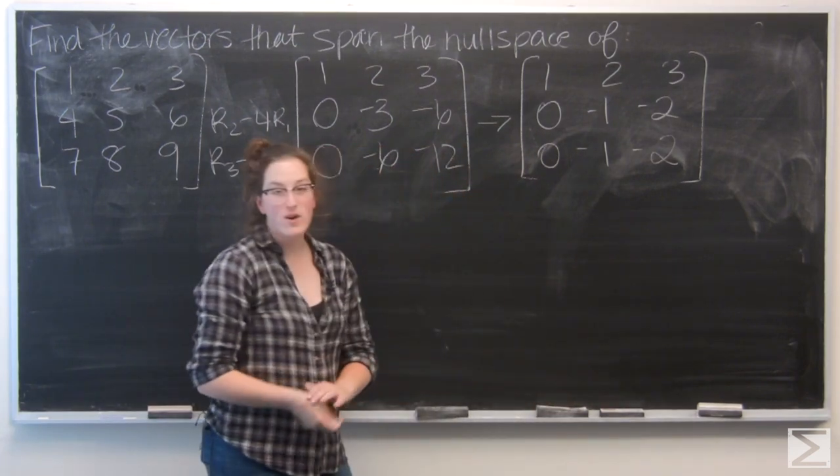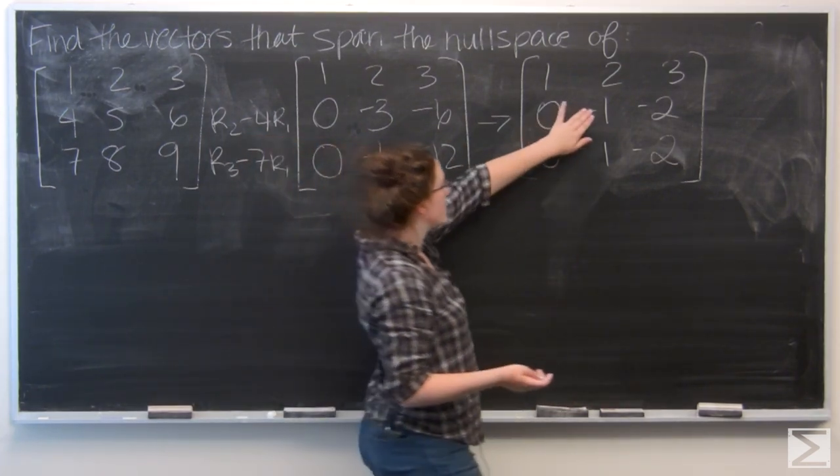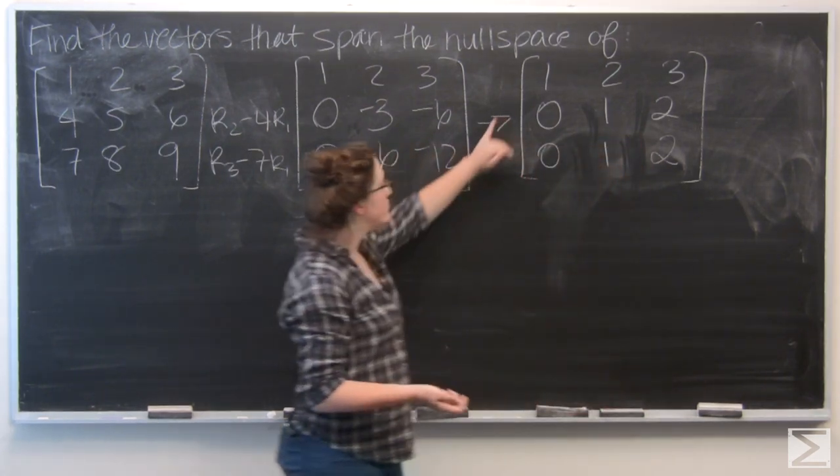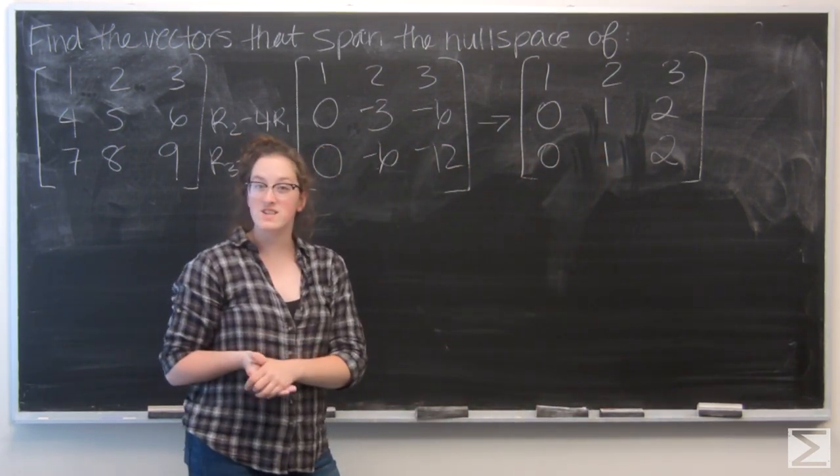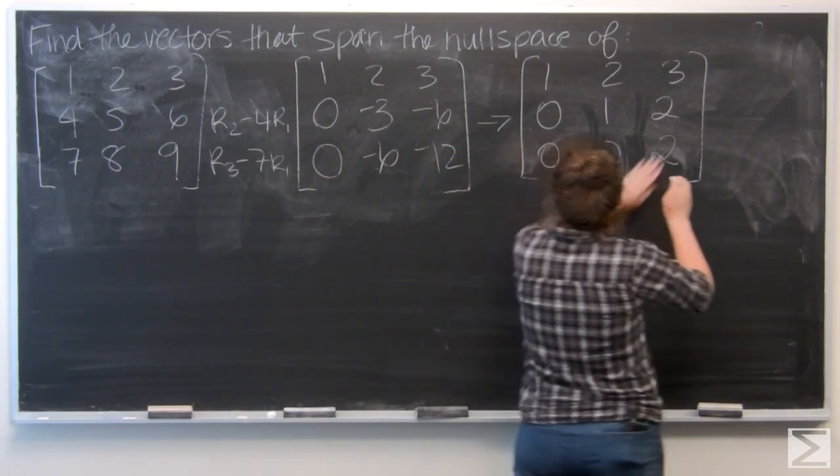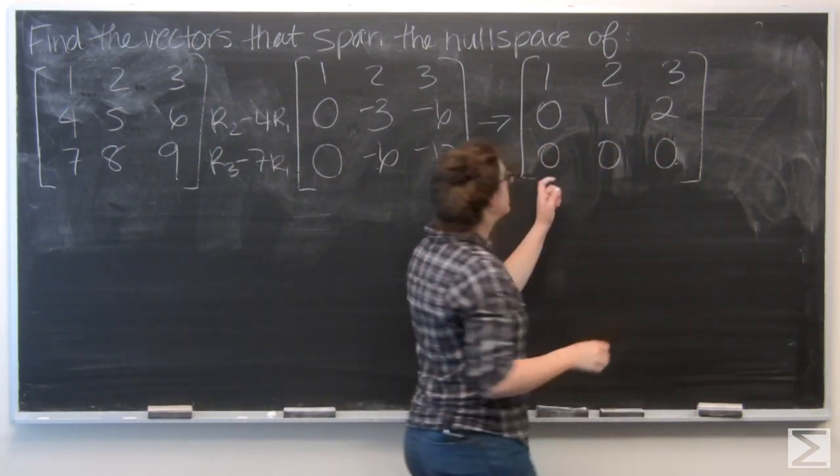And just to make things a little simpler, I'm going to go ahead and multiply both of those rows by negative 1. And I can see I have two duplicate rows, so I can subtract the second row from the third. Which gives me a row of zeros in the bottom.